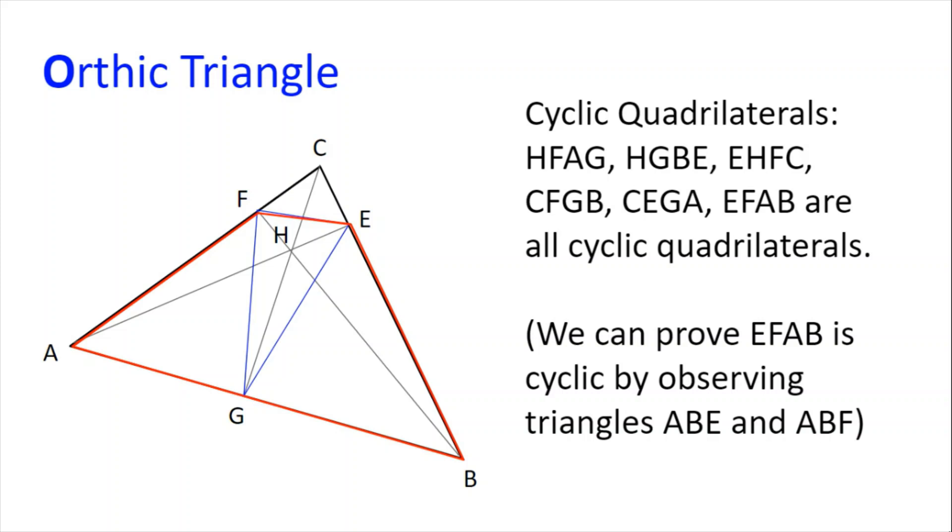Now if we look at the circumcircle of AFB, AB is still the diameter of the circumcircle, and the midpoint of AB is also the centre of the circumcircle of AFB. So the triangles AEB and AFB share the same circumcircle, and so AFEB lie on the same circle, making it a cyclic quadrilateral. The same can be done for CFGB and CEGA.